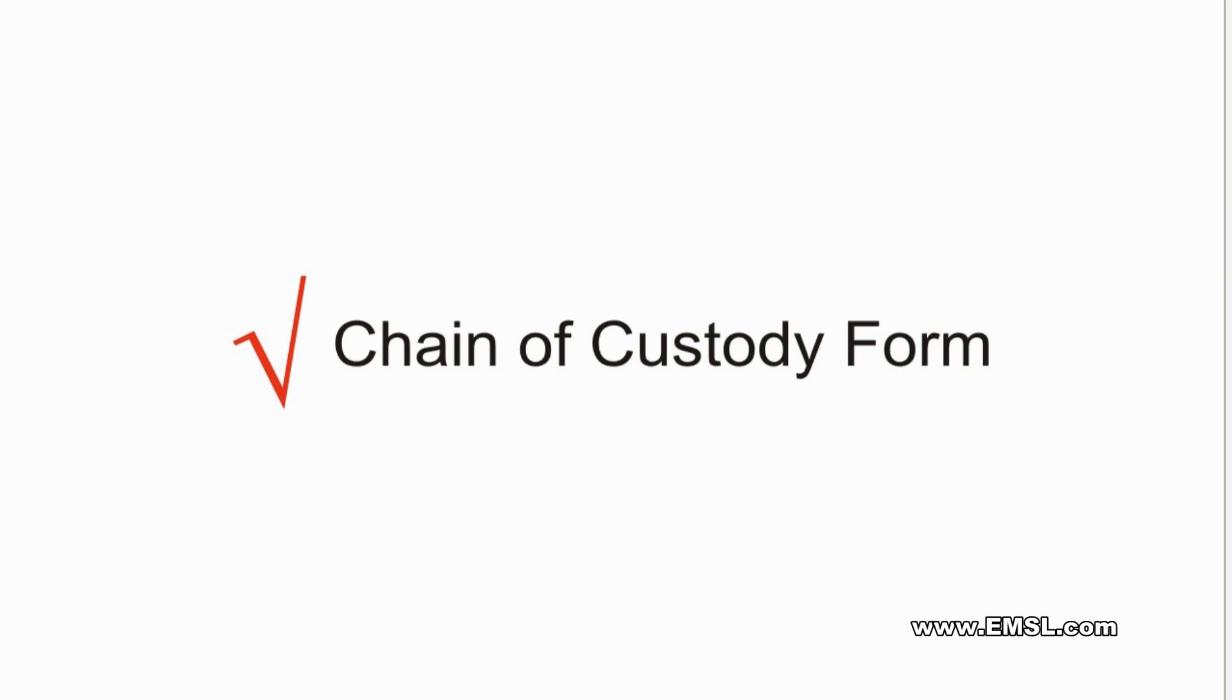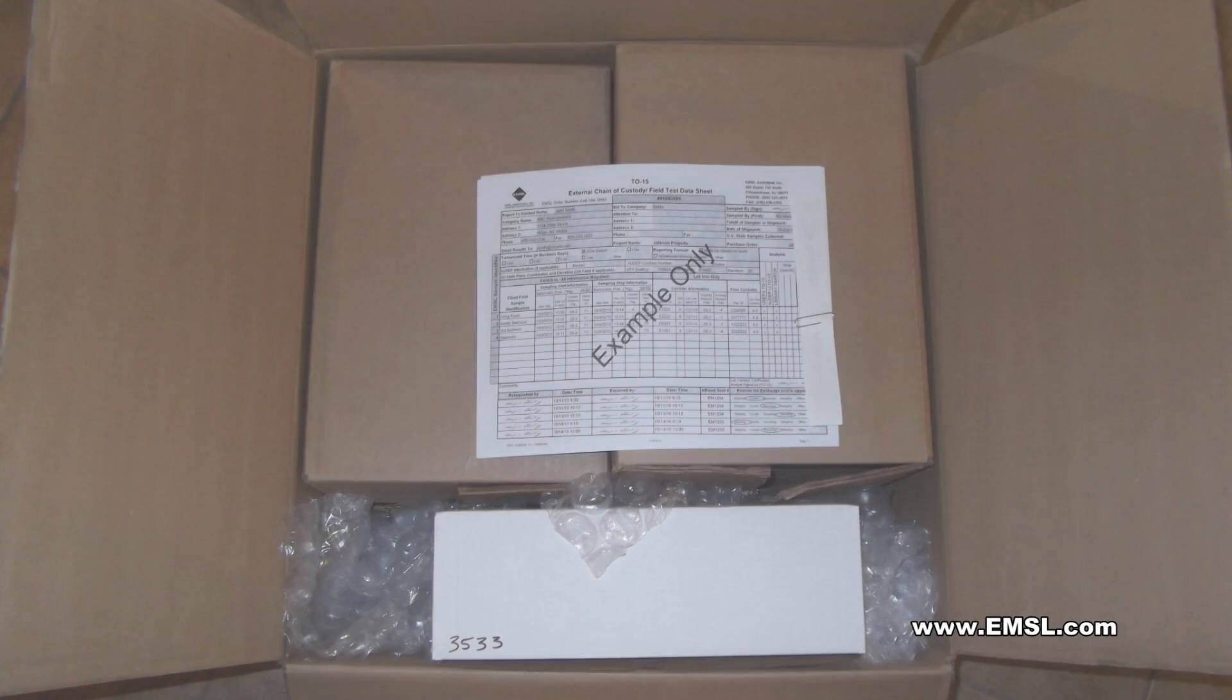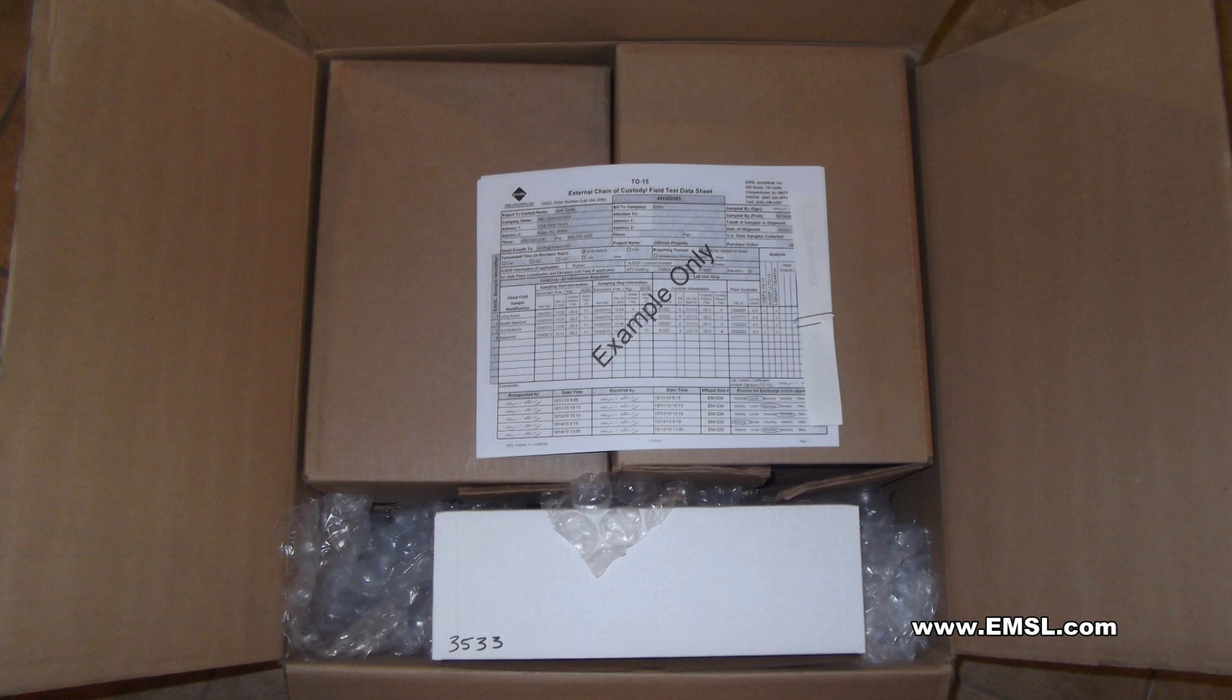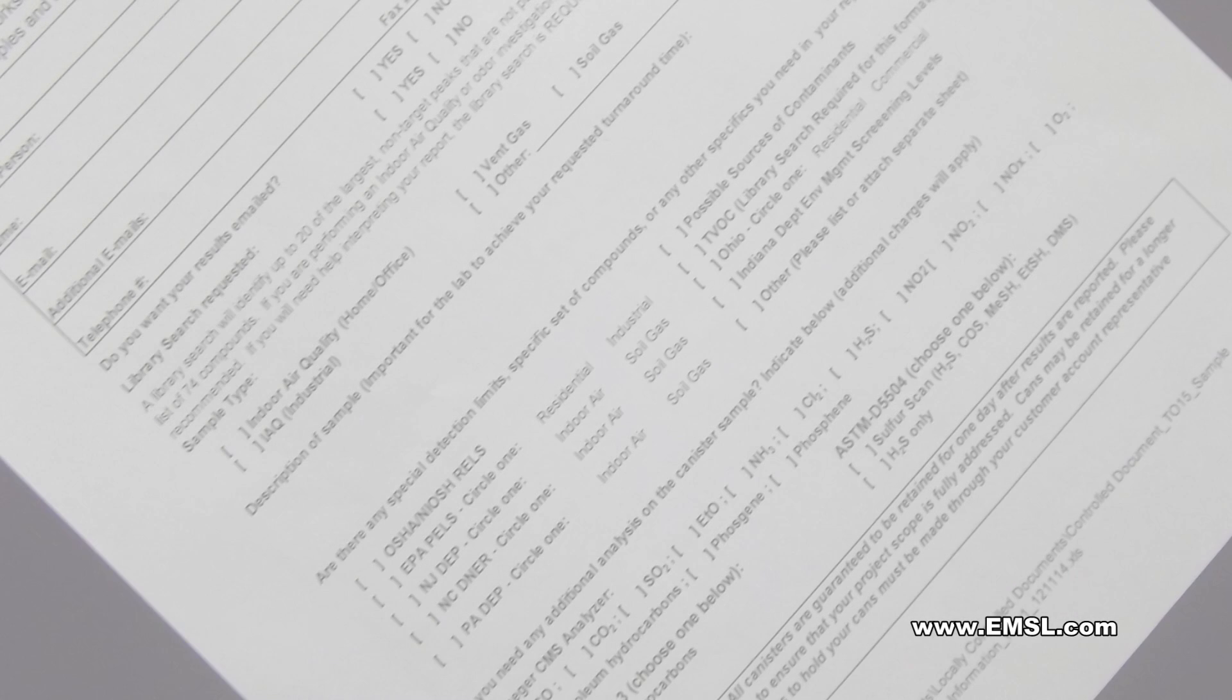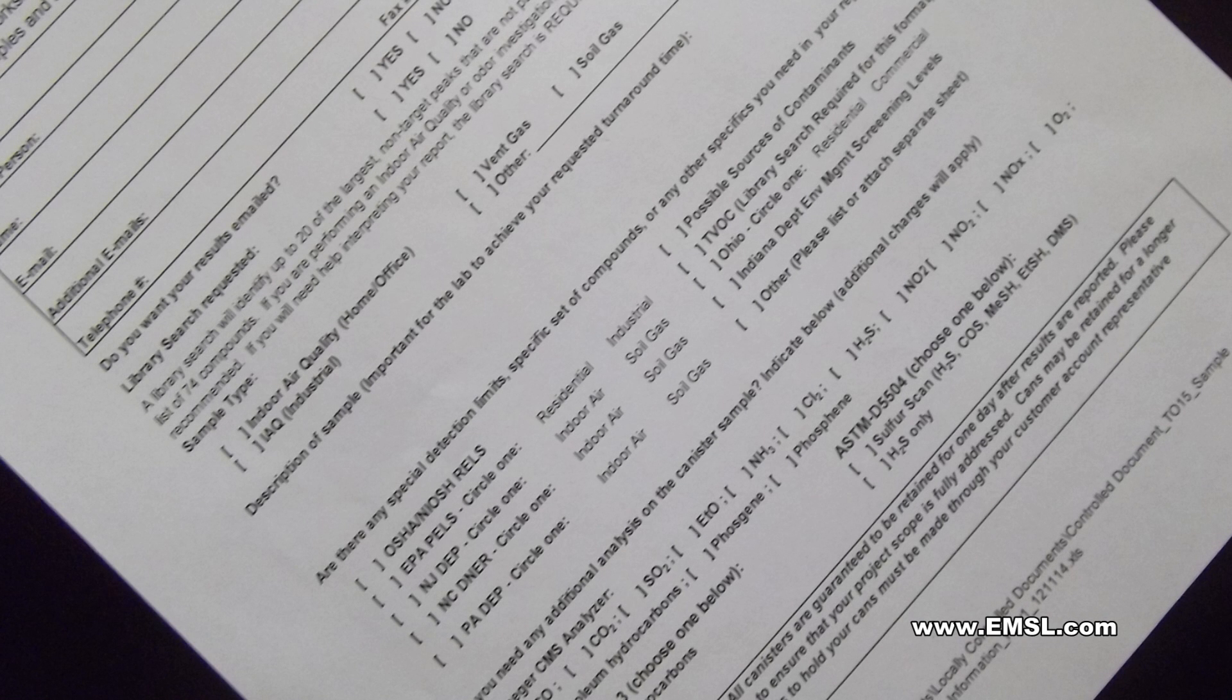Be sure to completely fill out the chain of custody and include this with the canisters and equipment packaged for return to EMSL Analytical. Please fill out the TO15 sample information form to aid in analysis and reporting. You will find on this form different formats which you may choose to make data interpretation easier.